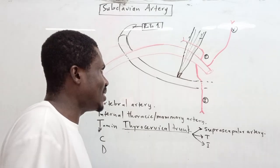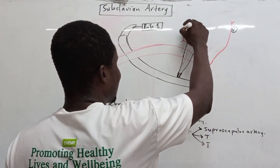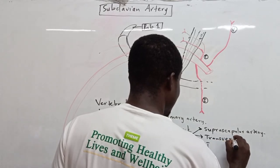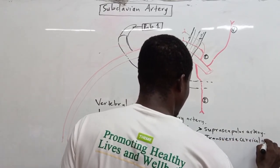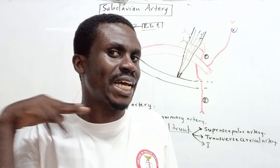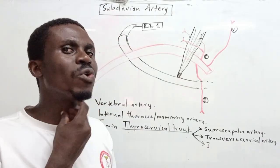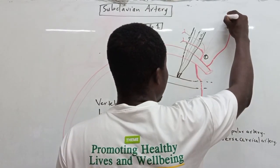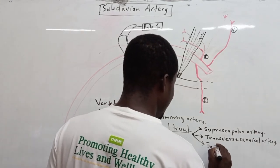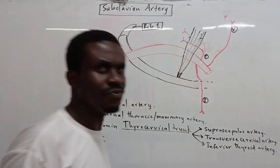The T of STI is the transverse cervical artery, running more or less transversely in the neck region. Anything cervical relates to the neck, and because this artery runs transversely it is called the transverse cervical artery.